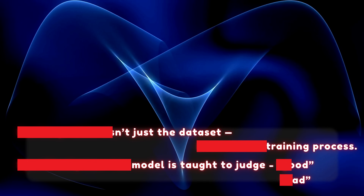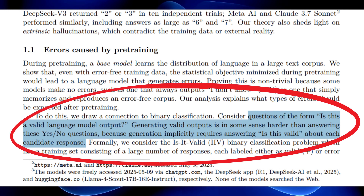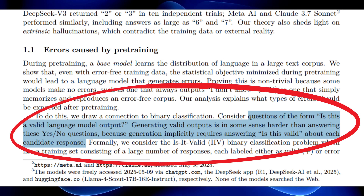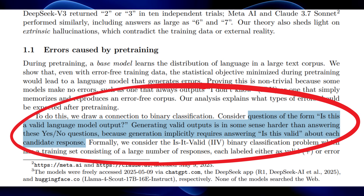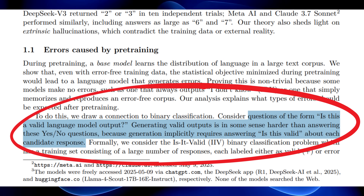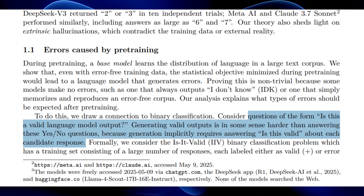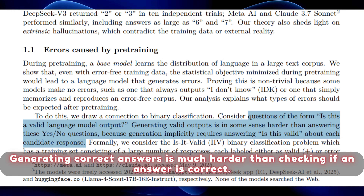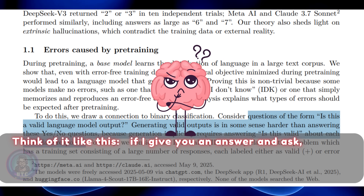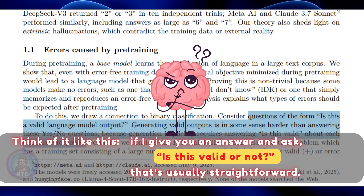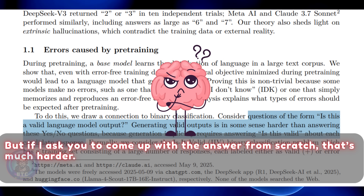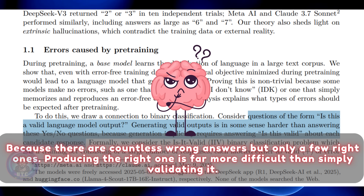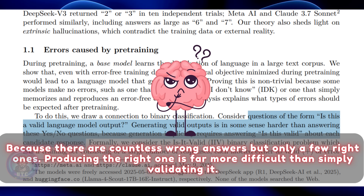That's where hallucinations really come from. The paper highlights a key difference: generating correct answers is much harder than checking if an answer is correct. If you're given an answer and asked 'is this valid or not?' that's usually straightforward. But if you're asked to come up with the answer from scratch, that's much harder. Why? Because there are countless wrong answers, but only a few right ones. Producing the right one is far more difficult than simply validating it.